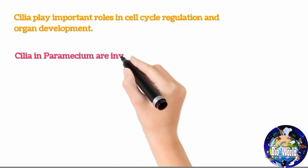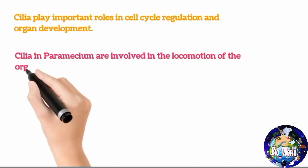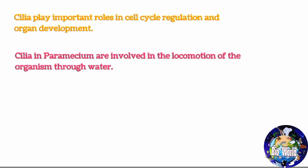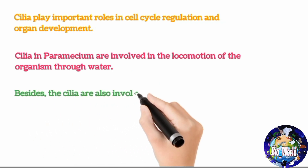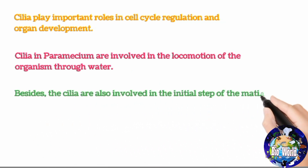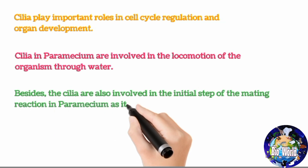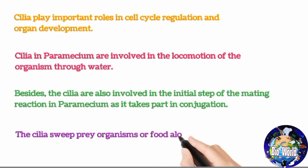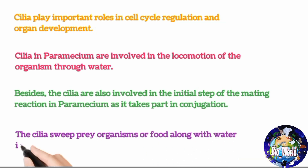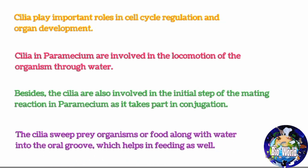Cilia in Paramecium are involved in locomotion through water. Cilia are also involved in the initial step of the mating reaction in Paramecium, as they take part in conjugation. Additionally, the cilia sweep prey organisms or food along with water into the oral groove, which helps in feeding as well.